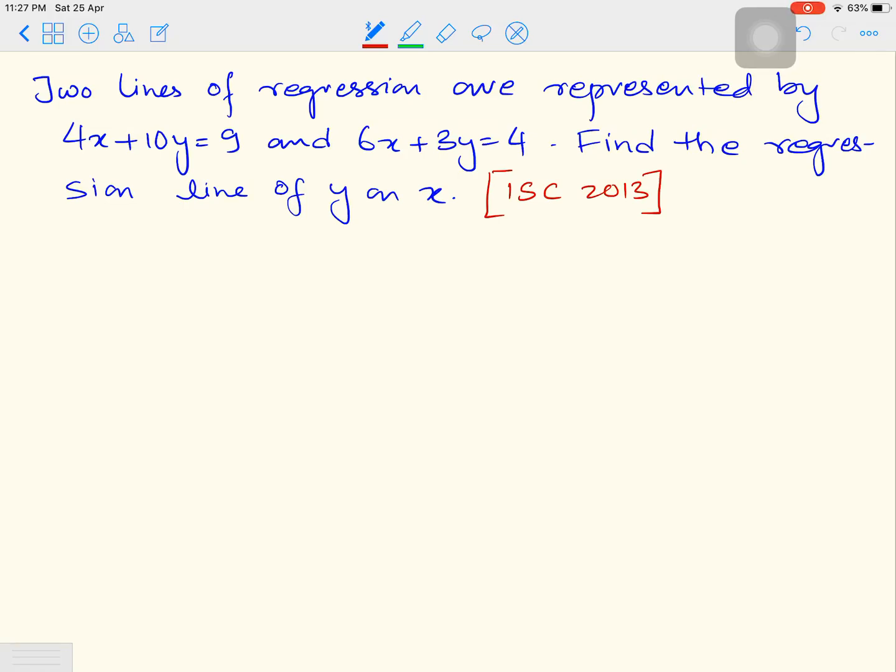Here we have a sum based on identification of lines of regression. Two lines of regression are represented by 4x plus 10y equals to 9 and 6x plus 3y equals to 4. Find the regression line of y on x. Your work is to simply identify which of these equations is a regression equation of y on x.